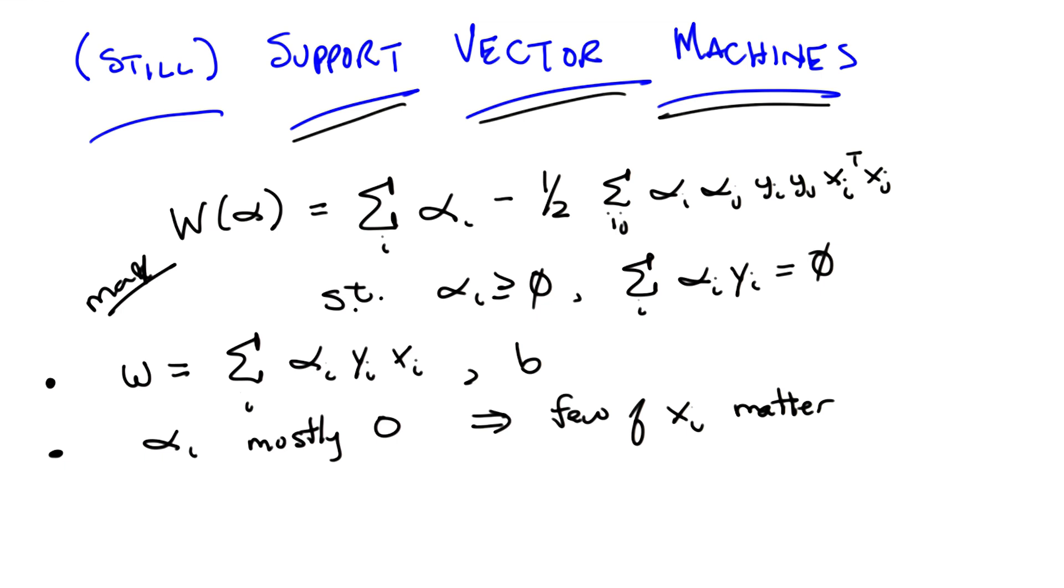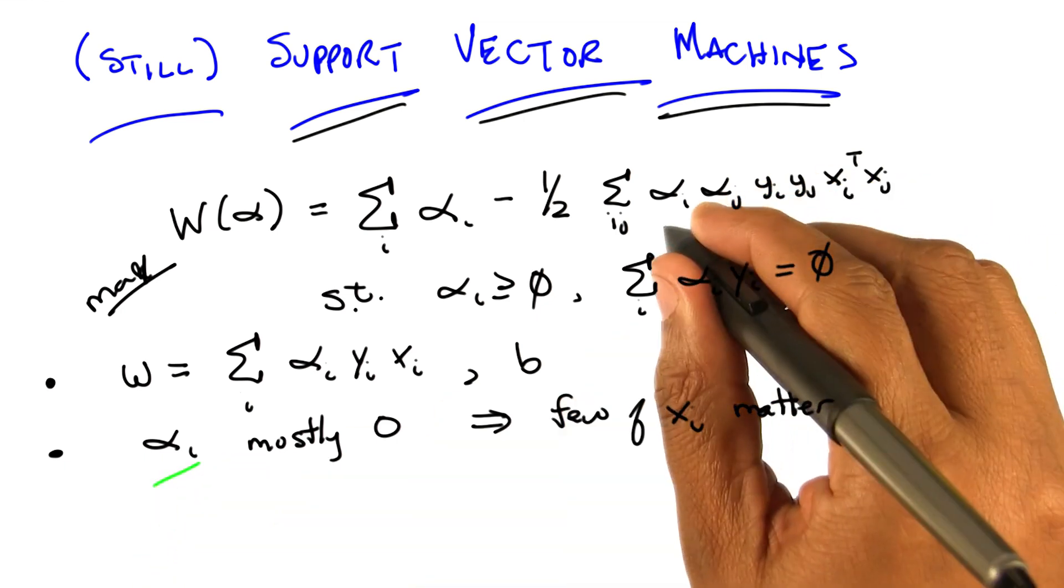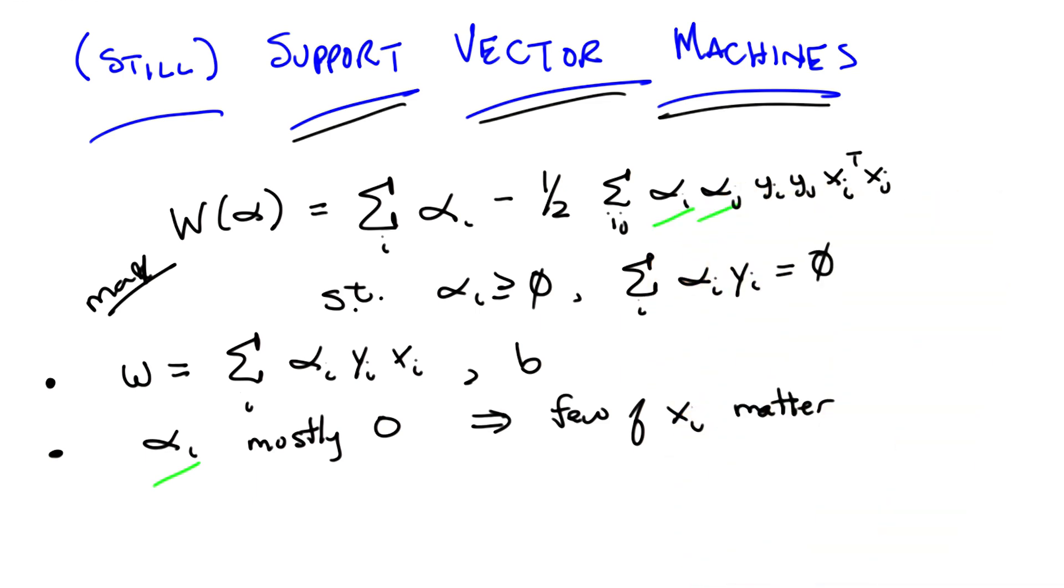But I want to point out something very important about some of the parameters in this equation. So we just got through talking about the alphas, right? Basically the alphas say, pay attention to this data point or not. But if you look carefully at this equation, the only place where the x's come into play with one another is here.